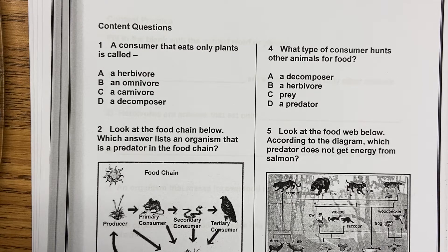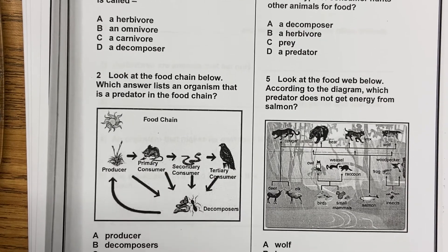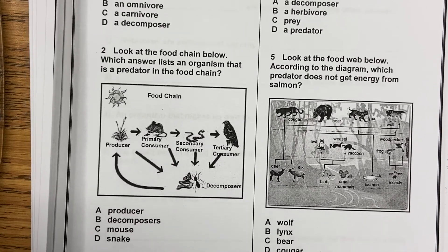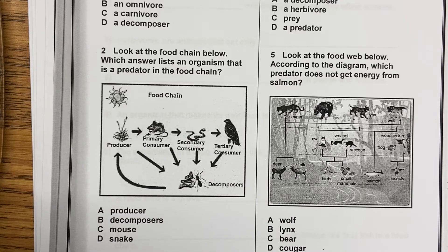Number two: Look at the food chain below. Which answer lists an organism that is a predator in the food chain? A, a producer; B, decomposers; C, a mouse; D, a snake.